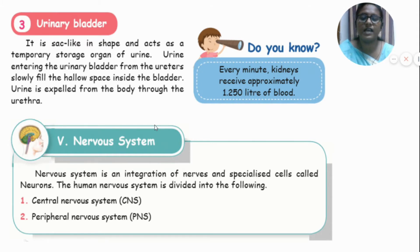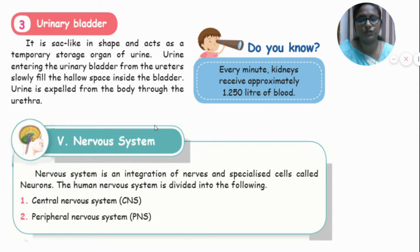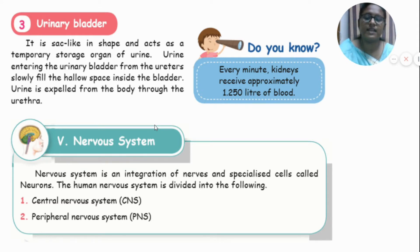Now let's move on to the nervous system. The nervous system is an integration of nerves and specialized cells called neurons. The human nervous system is divided into two parts: the central nervous system, called CNS, and the peripheral nervous system, called PNS.